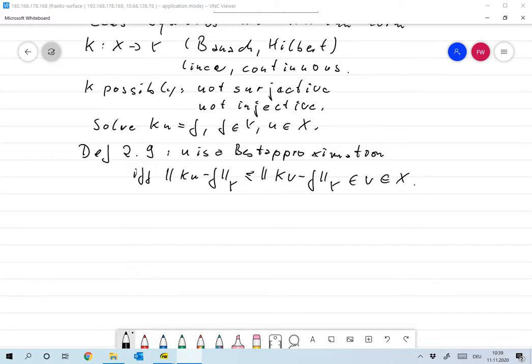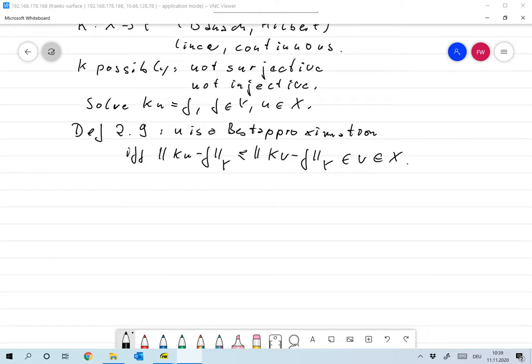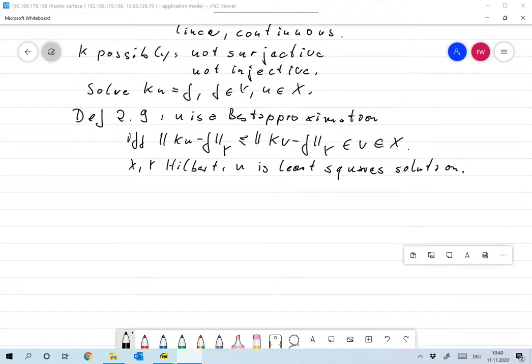If X and Y are Hilbert spaces, then u is called a least squares solution. And this is exactly what you do for finite dimensional operators on matrices in numerical linear algebra. That's exactly the same definition.